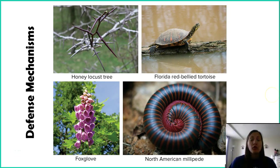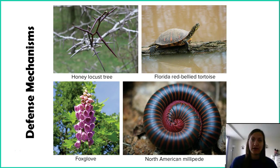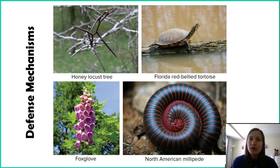One of the community relationships we talked about was predator-prey and herbivory, which more or less are the same thing — one organism consuming another. To understand those relationships more, because it's probably the most common relationship we see in communities, organisms don't want to be eaten. If you get eaten, that stops reproduction and your genes are not passing on to the next generation. So this lecture is all about defense mechanisms.